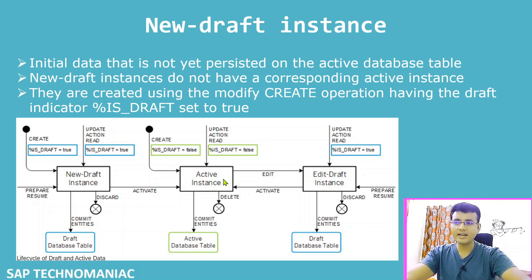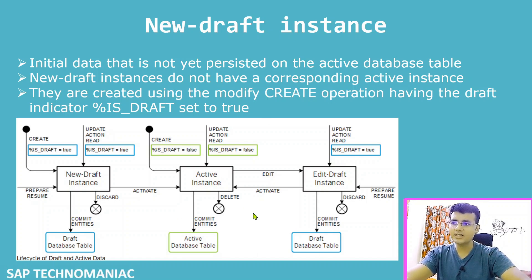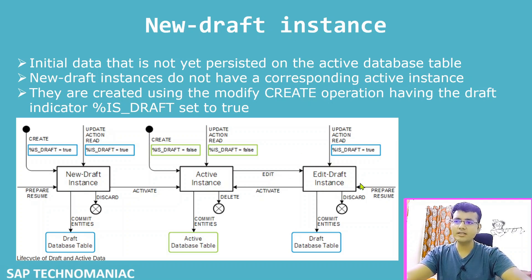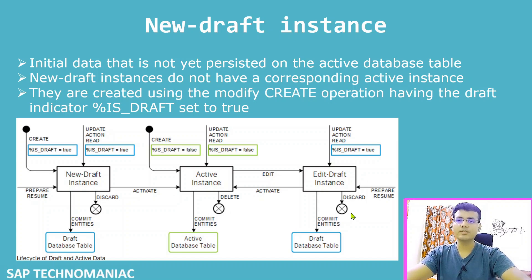There are multiple ways to trigger these draft instances, which we will discuss in detail. At any time, if you do not want to save, you can discard any of the instances — you can discard the new draft instance, the active instance, or the edit draft instance.